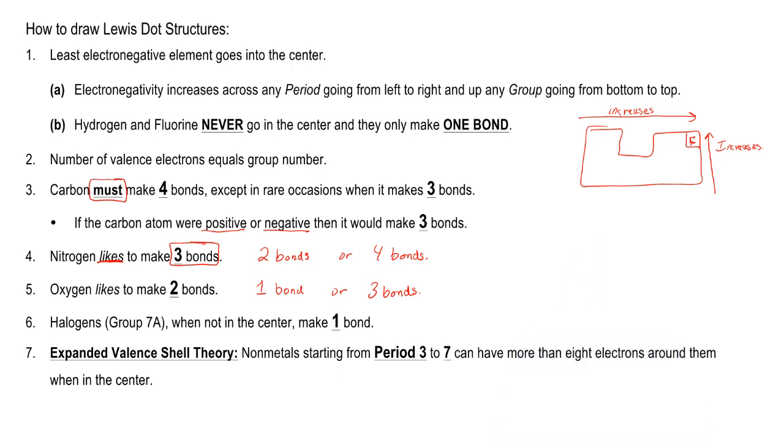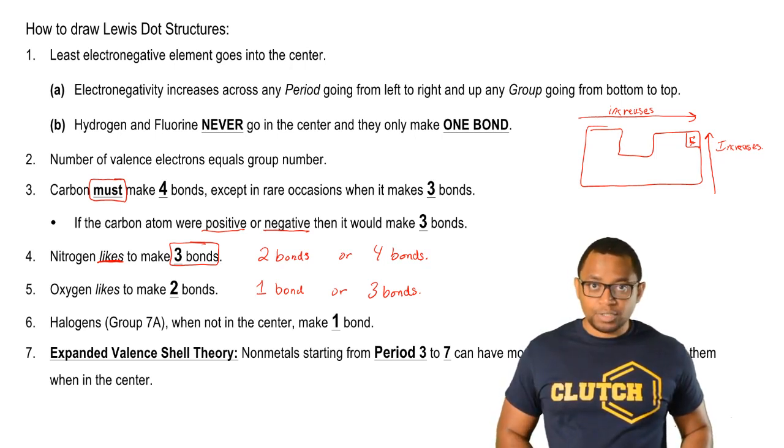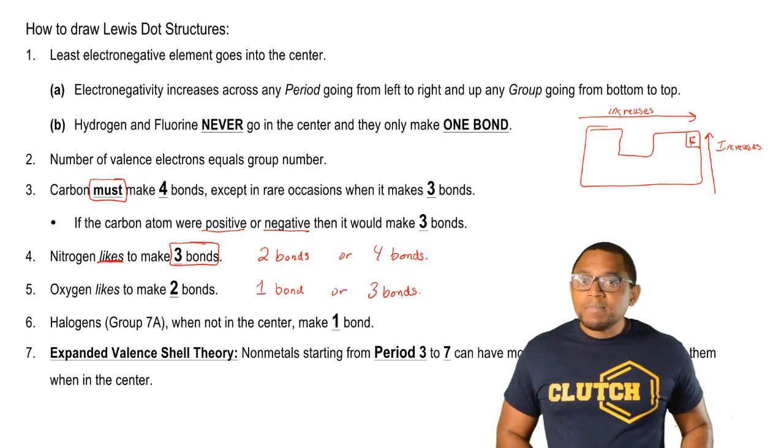Then finally, we have the expanded valence shell theory. Basically, this means that we have nonmetals starting from period 3 or row 3 to 7 can have more than 8 electrons around them when in the center. They go beyond the octet rule in terms of drawing Lewis dot structures. These are the key rules you need to keep in mind when drawing any type of Lewis dot structure.